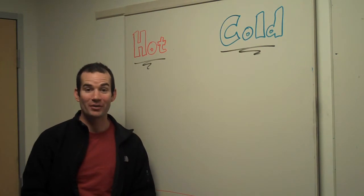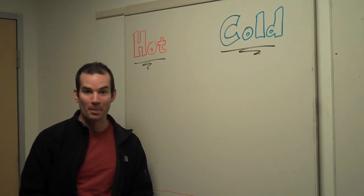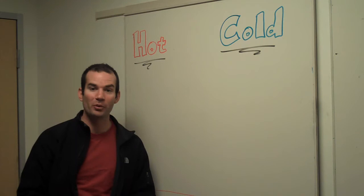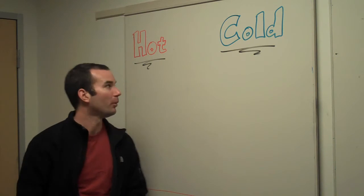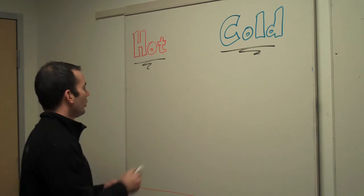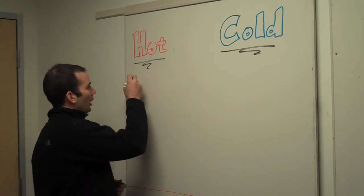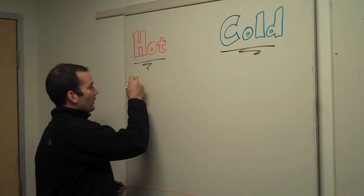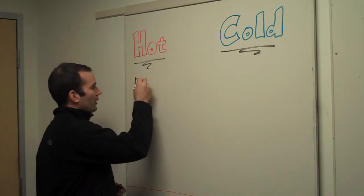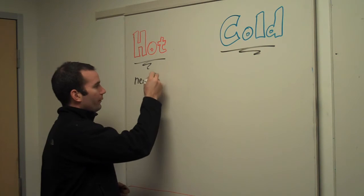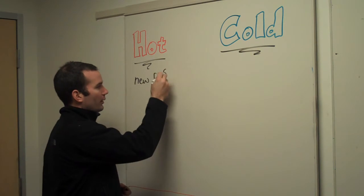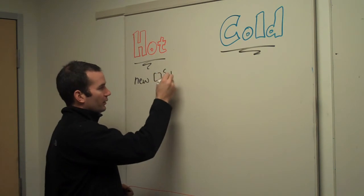Today I want to talk about the difference between hot and cold observables. Before we get into observables, I want to talk about enumerables. A hot enumerable is one that exists before I enumerate it.